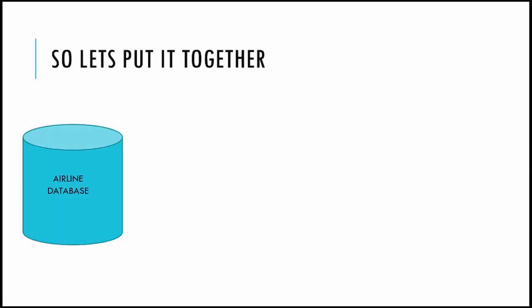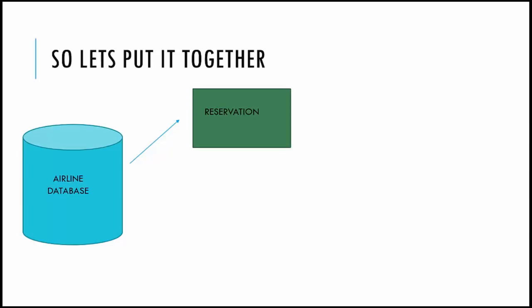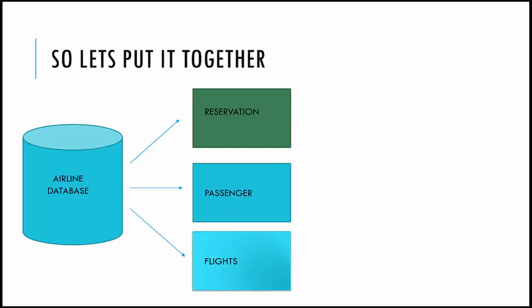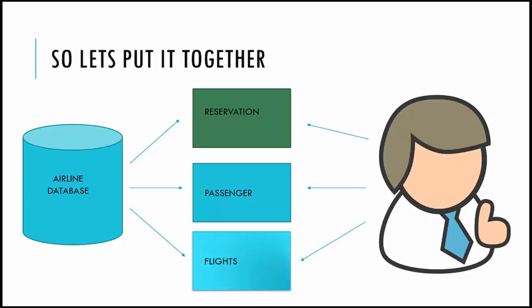Let's take the example of an airline database. You create an airline database, then create tables according to your data — say, a reservation table with reservation details, a passenger table with first name and last name, and a flight information table with take-off time and flight numbers. A person who wants data can query these tables individually or join the reservation and passenger tables together to see which passengers reserved which flights. That's where the concept of joins comes into play.